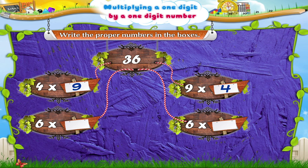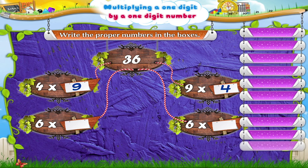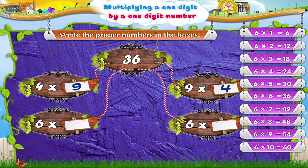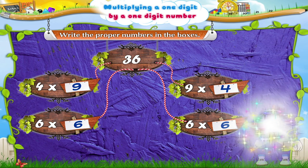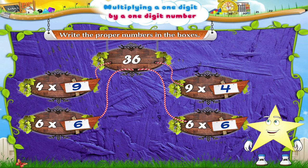And for the third box, we will say the 6 times table till we reach 36. 6 times dash is 36. 6 sixes are 36. The number in the last box has to be 6. Great Starry! You have finally understood how to multiply one-digit numbers.